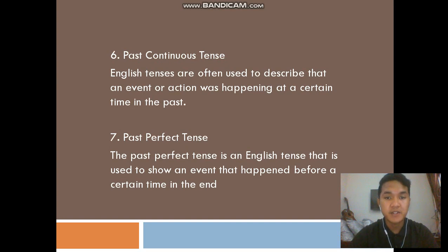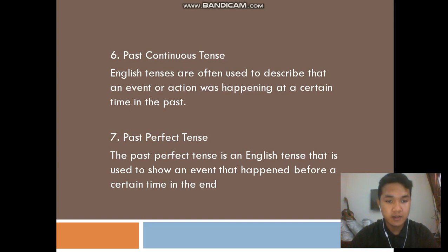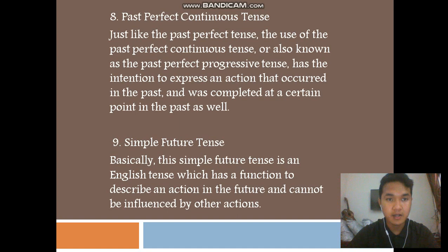Number six: past continuous tense. This English tense is often used to describe that an event or action was happening at a certain time in the past. Number seven: past perfect tense. The past perfect tense is an English tense used to show an event that happened before a certain time in the past.